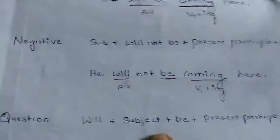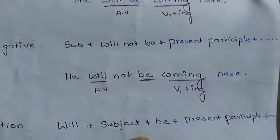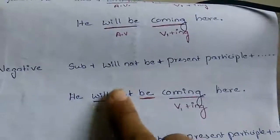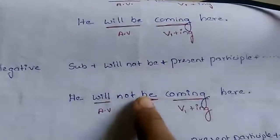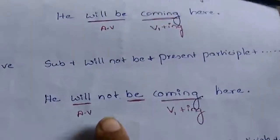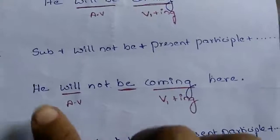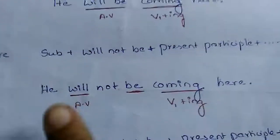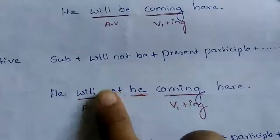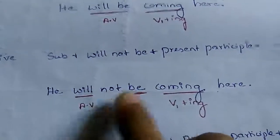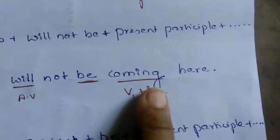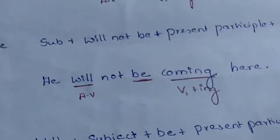See the negative statement — how to construct a negative statement in future continuous. We add 'not' in between 'will' and 'be' to frame a negative statement. That is: 'He will not be coming here.' In this sentence, 'he' is the subject, 'will' is the helping verb, and we add 'not' to it, followed by 'be' and the present participle of the main verb.